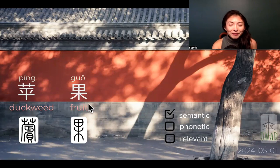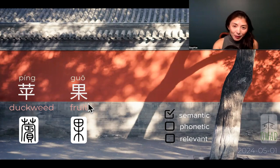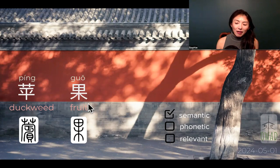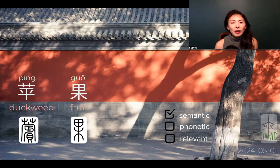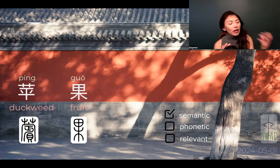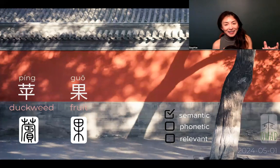And 苹果 is apple. Before apple becomes apple, we treat apple as the generic fruit — that's apple. So this is not really a translation of a brand name. It's simply a generic English term, apple, that found its cousin in Chinese existence.